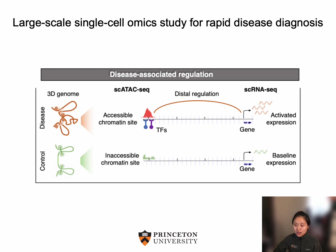Therefore, extracting robust biological signals from single-cell RNA-seq and ATAC-seq datasets on the same samples would benefit from improved methods for automated integration of data from heterogeneous samples and for leveraging related expression and chromatin changes to improve robust identification of regulatory changes.